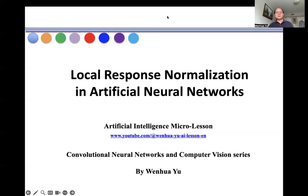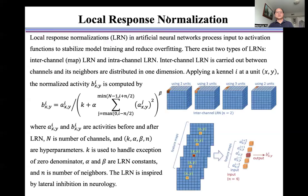In this video, I introduce local response normalization in artificial neural networks. Local response normalizations process inputs to activation functions to stabilize model training and reduce overfitting.